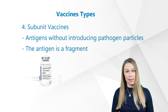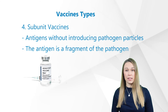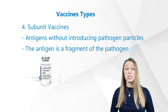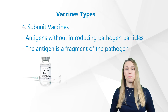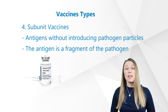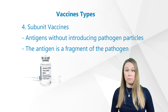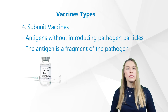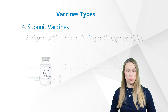A subunit vaccine presents one or more antigens to the immune system without introducing pathogen particles, whole or otherwise. The antigens involved can be any molecule and do not need to be a protein subunit. The word subunit simply means the antigen is a fragment of the pathogen. Just like inactivated vaccines, the vaccine is completely dead and is therefore less risky. For example, the subunit vaccine against hepatitis B virus is composed only of the surface proteins of the virus.